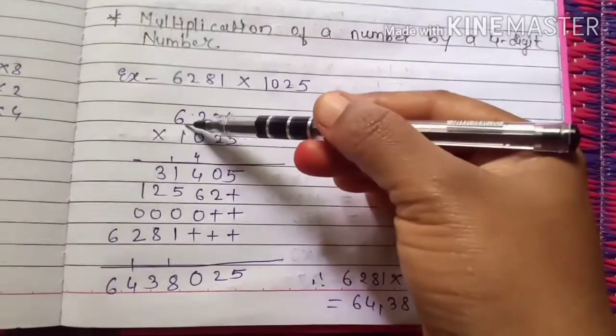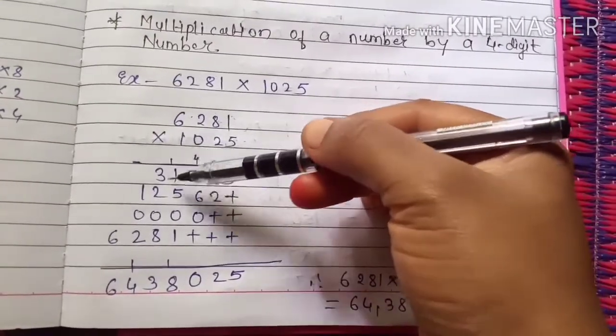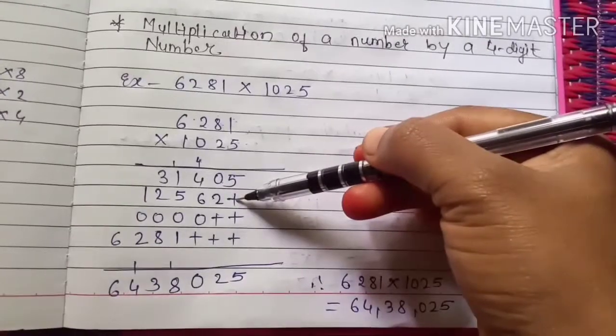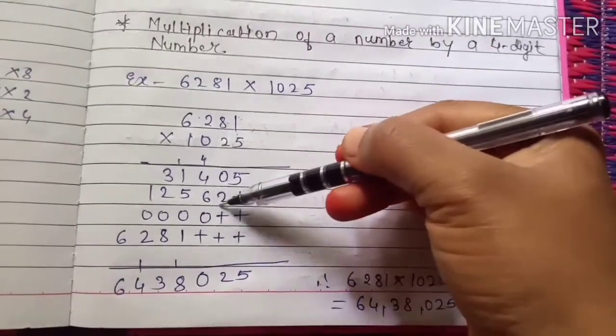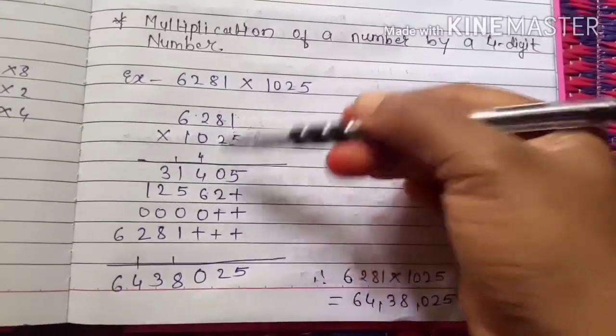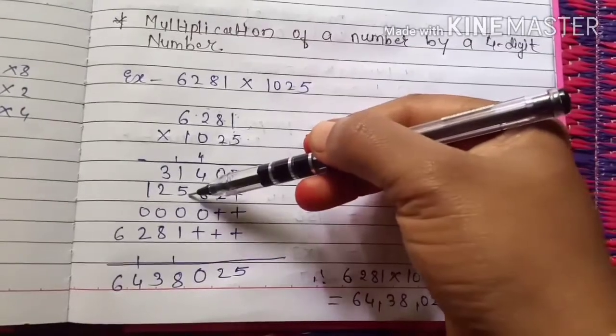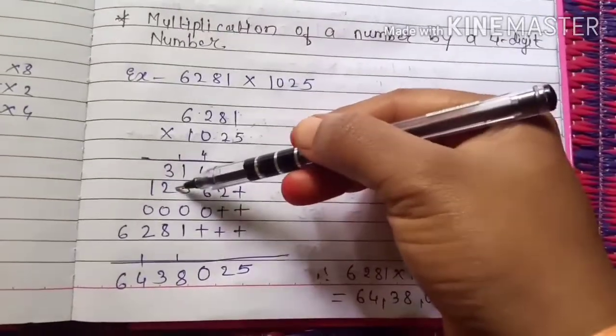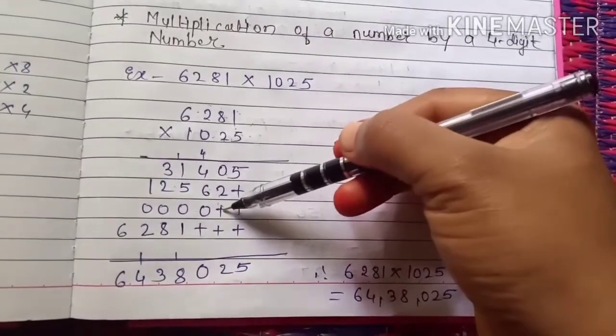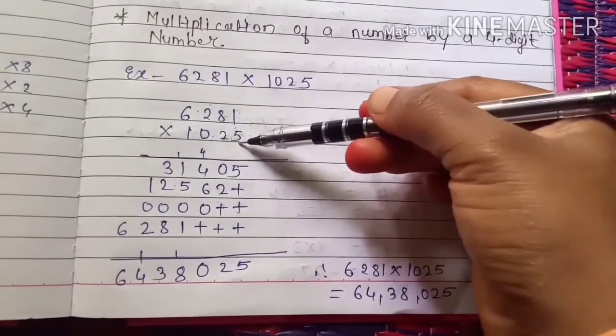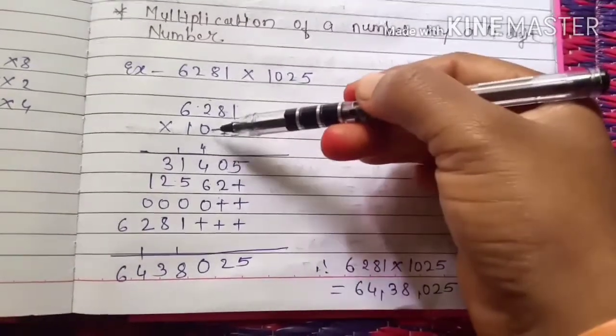Then put plus sign here. 2 ones are 2, 2 eights are 16, 2 twos are 4 plus 1 is 5, 2 six are 12. Then put 2 plus signs here because we have completed the ones place as well as the tens place. Now we are going to multiply the hundreds place.